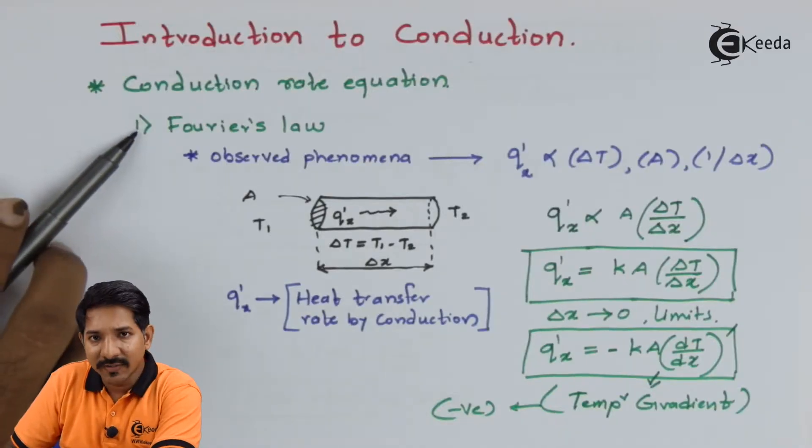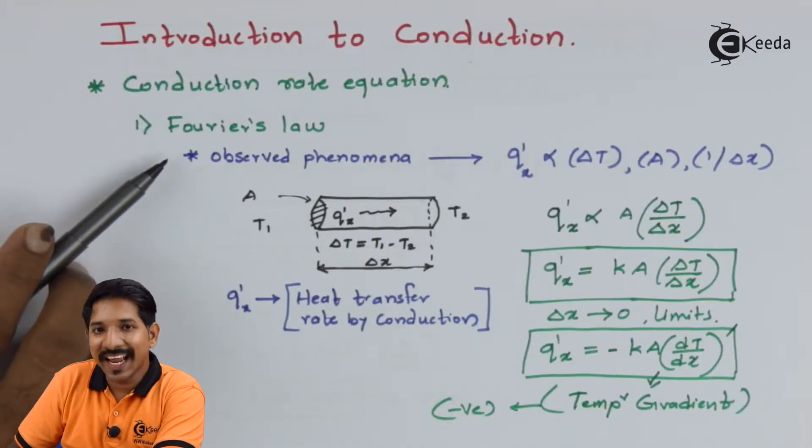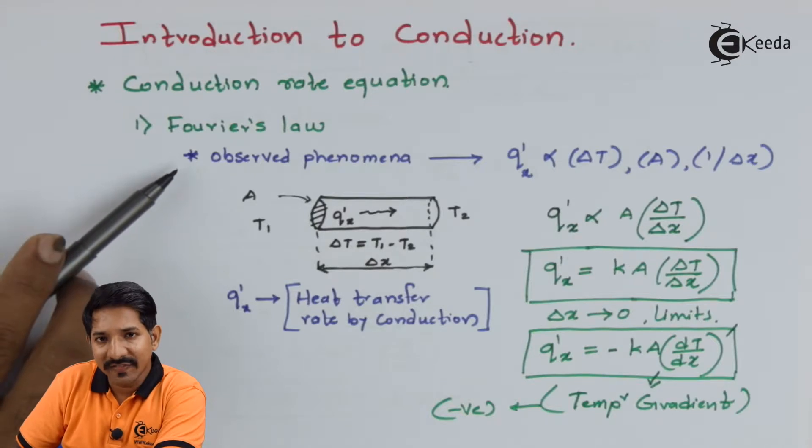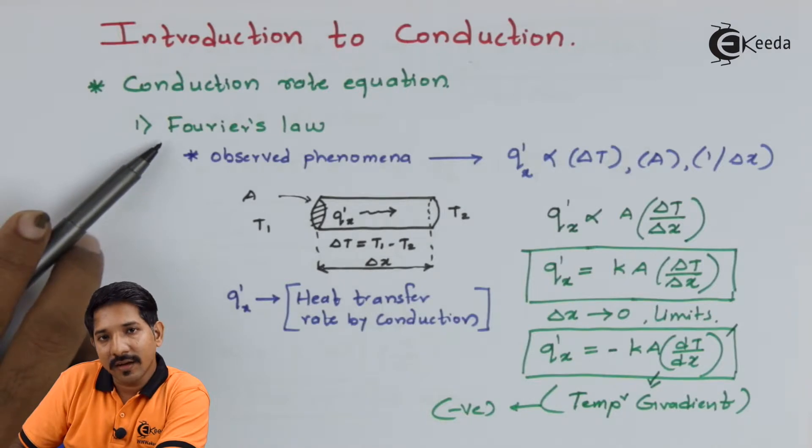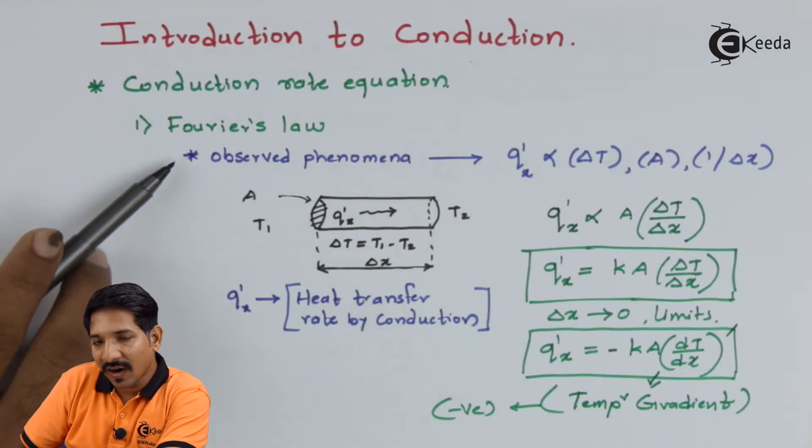The Fourier's law is something which is not derived from the first principle but in fact it is an observed phenomenon. He must have conducted some experiment and he must have found some equation.